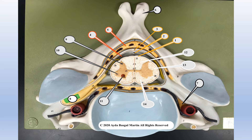The three layers of meninges protect the spinal cord and create three different spaces; we will discuss two spaces here. Number four labels the subarachnoid space — below the arachnoid layer — which is the space the cerebrospinal fluid flows through. Number five is called the epidural space because it is located above the dura mater, and you can see it is filled with adipose tissue and blood vessels.